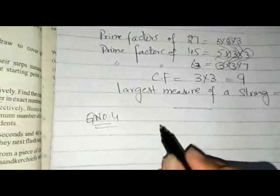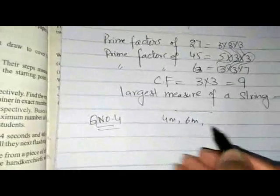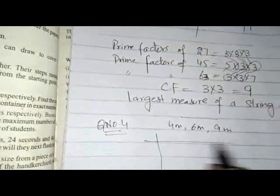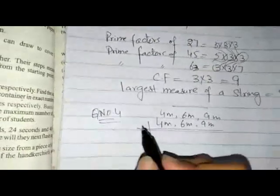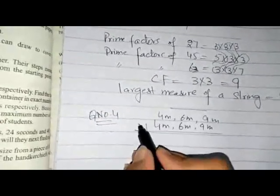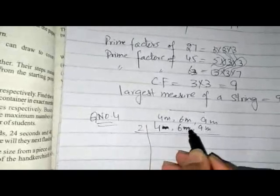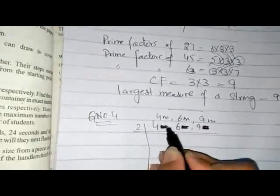Question 4: Find the shortest length of pipe that can measure exactly 4 meters, 6 meters, and 9 meters long. Here we have to find the shortest length. For the shortest length we have to find the LCM of 4 meter, 6 meter, and 9 meter.